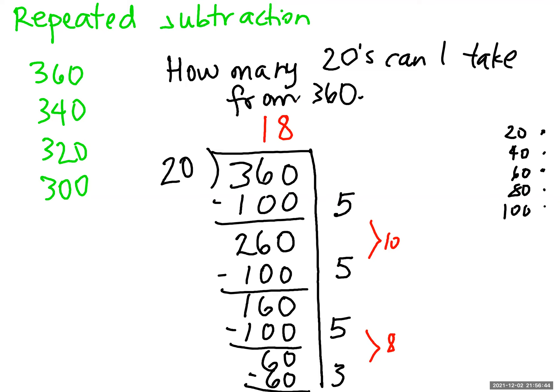So my answer, how many 20s can I take away from 360? Is 18. That's our quotient. All right, let's look at equal groups.